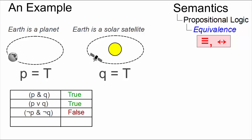And using the negative operator, we can define not P and not Q is false. And not P or Q is also false.